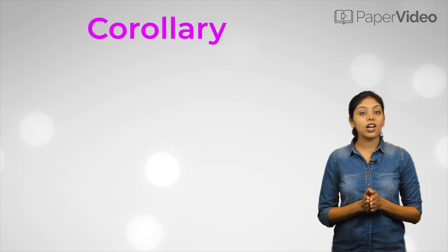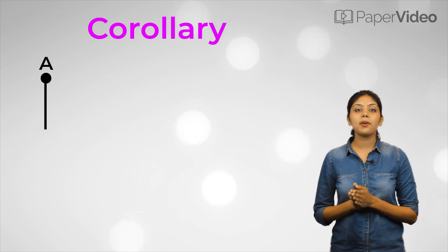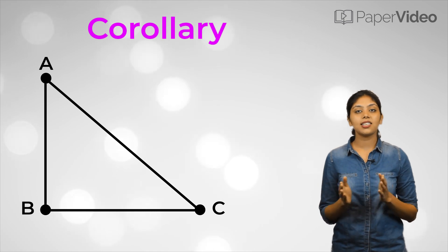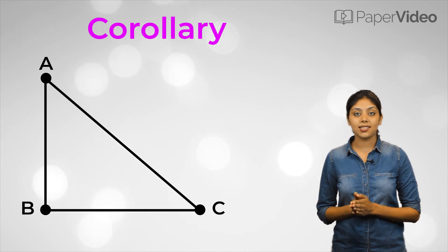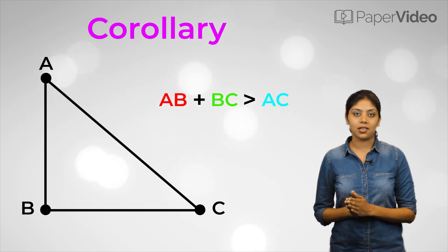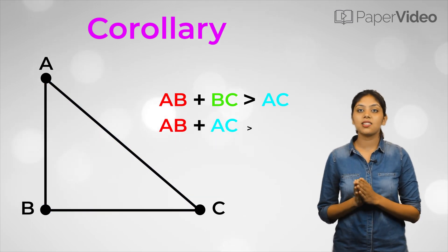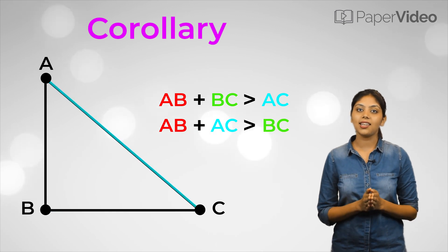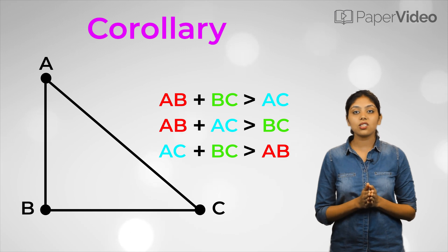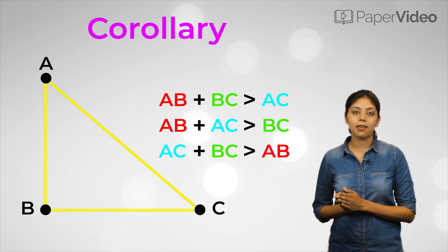This theorem leads us to an important corollary. According to the corollary, the sum of the lengths of any two sides of a triangle is always greater than the third side. This means that in triangle ABC, AB plus BC is greater than AC, AB plus AC is greater than BC, and AC plus BC is greater than AB. This corollary holds true for all types of triangles.